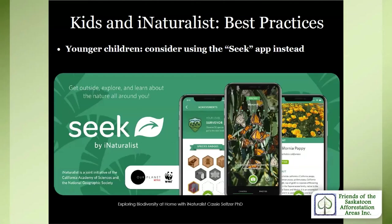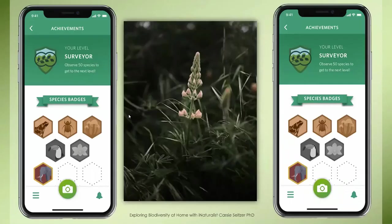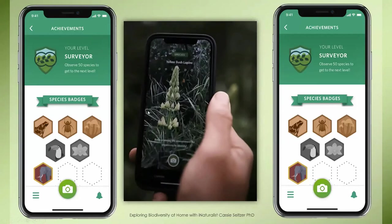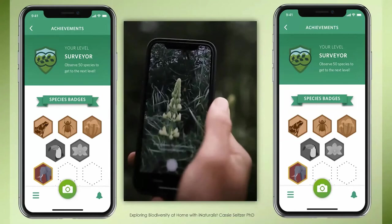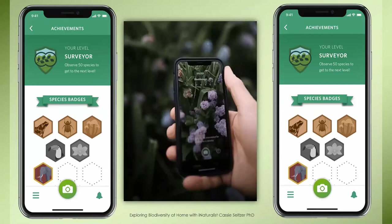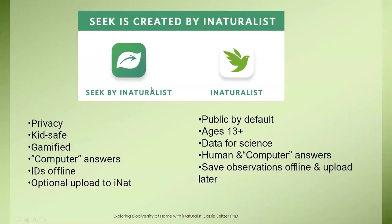Seek is another amazing app for the younger crowd. Anybody at all can answer the question, what is it? They just point the phone at the plant, organism, or insect, and it uses the iNaturalist database of images to bring forward a suggested name. Seek is kids-safe and it's gamified to give badges and rewards for being out in the field looking at things — it's kind of like a Pokémon game with nature. But if you want to help out the scientific community and add to the data worldwide, then iNaturalist is a better choice. It's an easy way to get into conversations and save your observations.